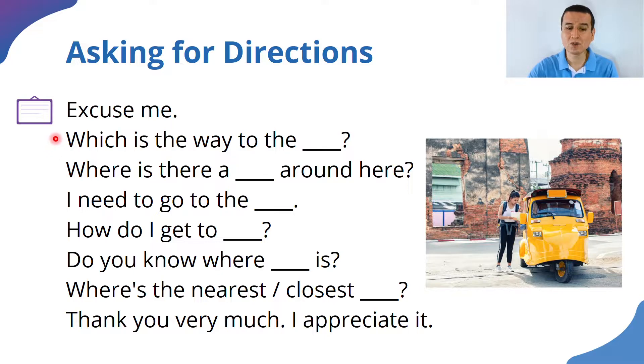And the question could be something like this. Any of these could work. For example, you could say, which is the way to the... And then you say the name of the place. Let's say bakery all the time. I love bread. Where is there a bakery around here? For example.